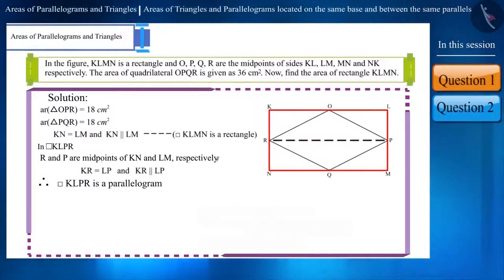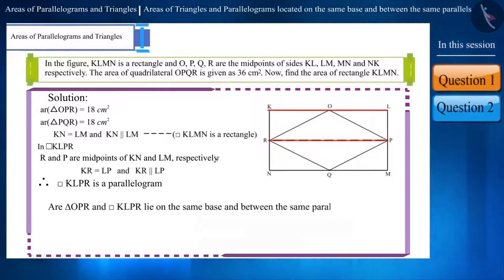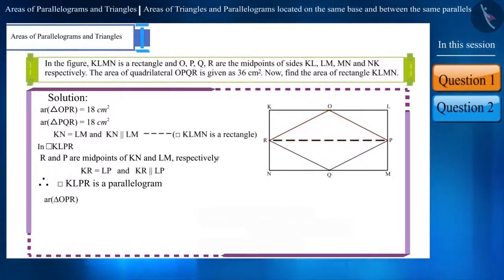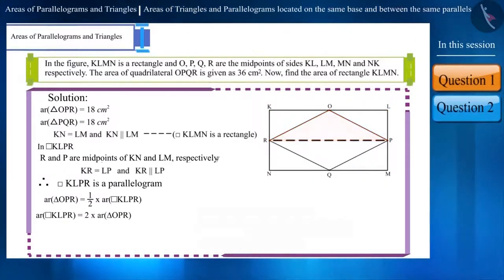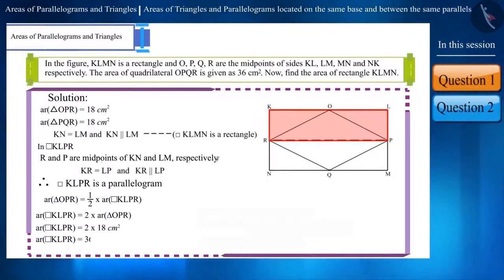In quadrilateral KLMN, the two quadrilaterals formed by joining the midpoints of a pair of opposite sides will also be parallelograms. Can we say that triangle OPR and parallelogram KLPR lie on the same base and between the same parallel lines? Yes. This means the area of triangle OPR is half the area of parallelogram KLPR, or the area of parallelogram KLPR is twice the area of triangle OPR. Hence, the area of parallelogram KLPR is twice 18 cm², which gives us the area of parallelogram KLPR equal to 36 cm².